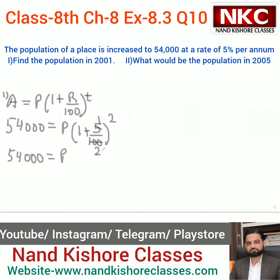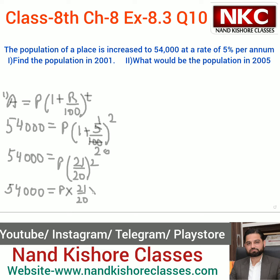5 and 100 cancel to give 20, so I get P into (21/20) squared. I need to find the value of P. Writing 54,000 on the left, it equals (21/20) times (21/20).